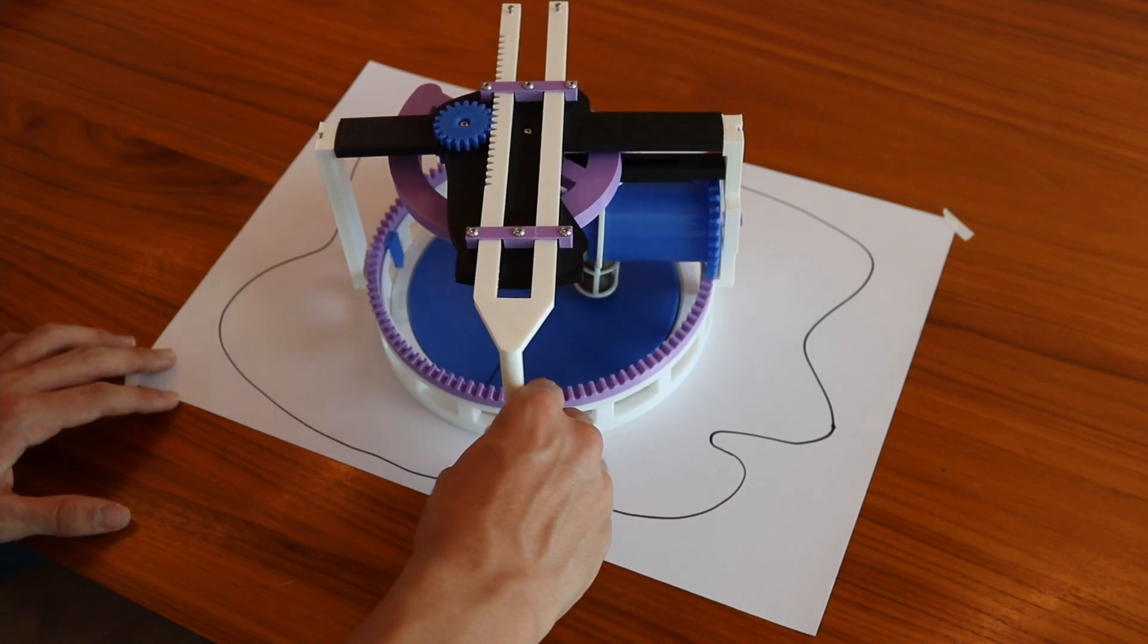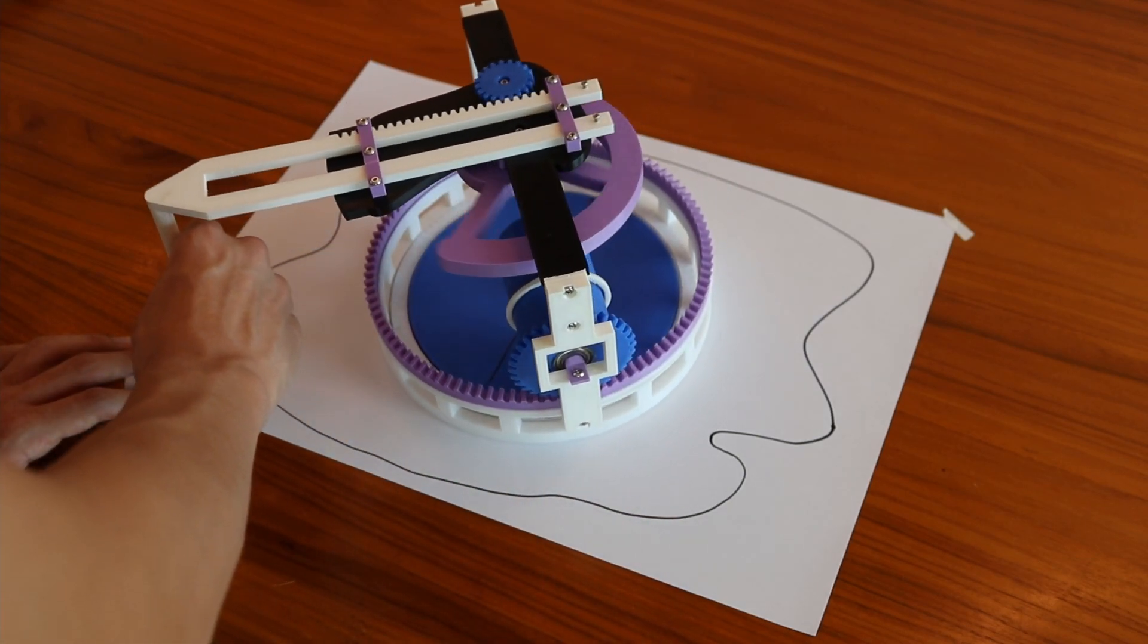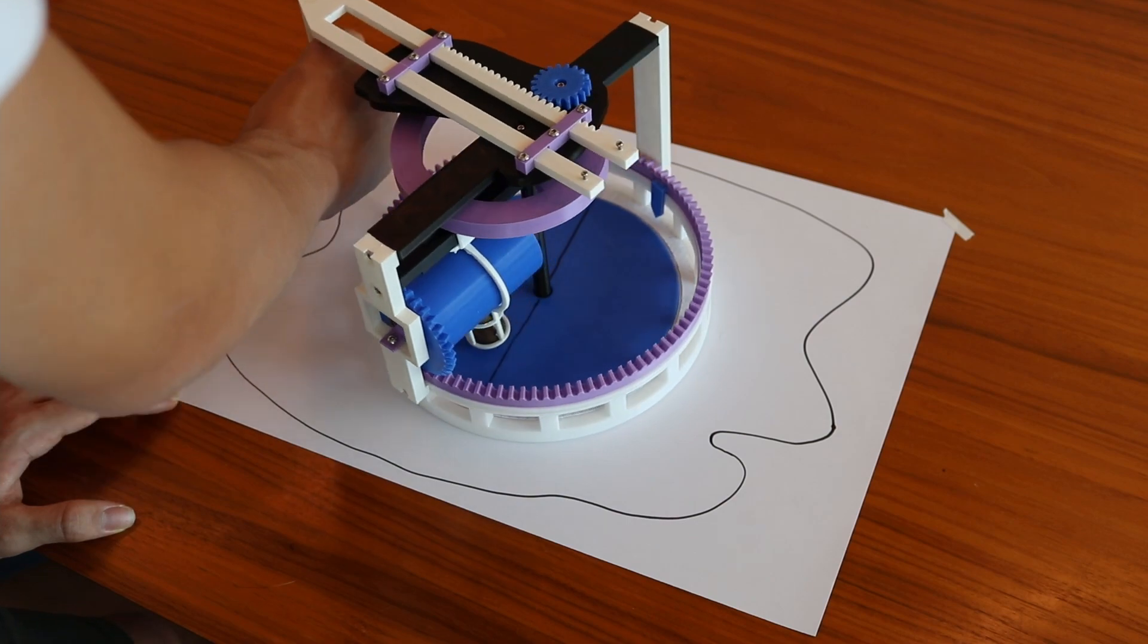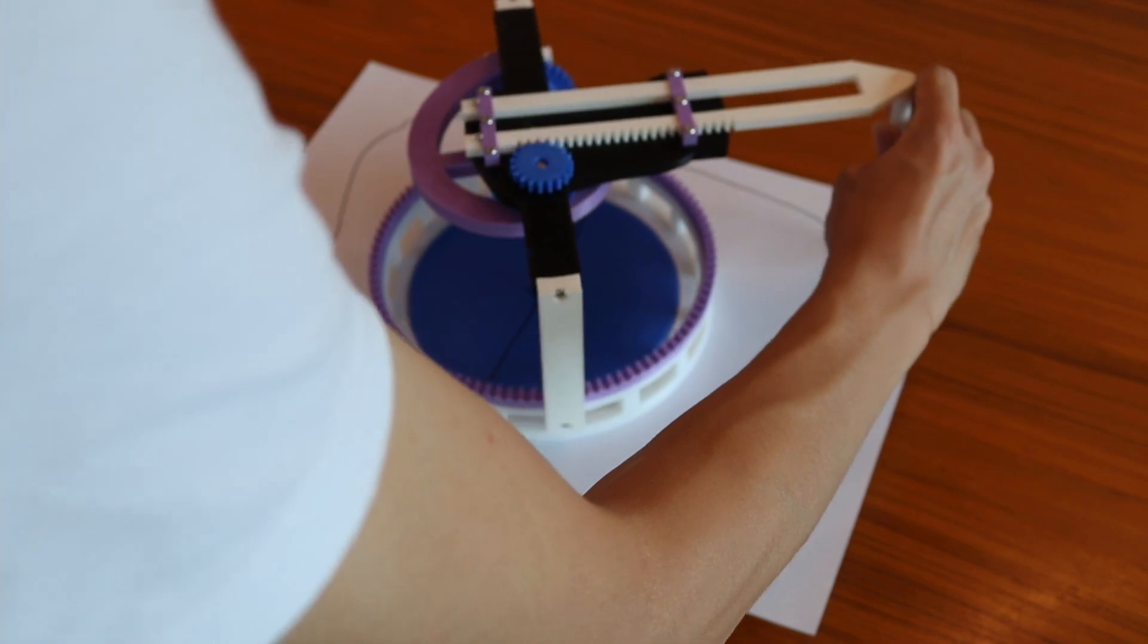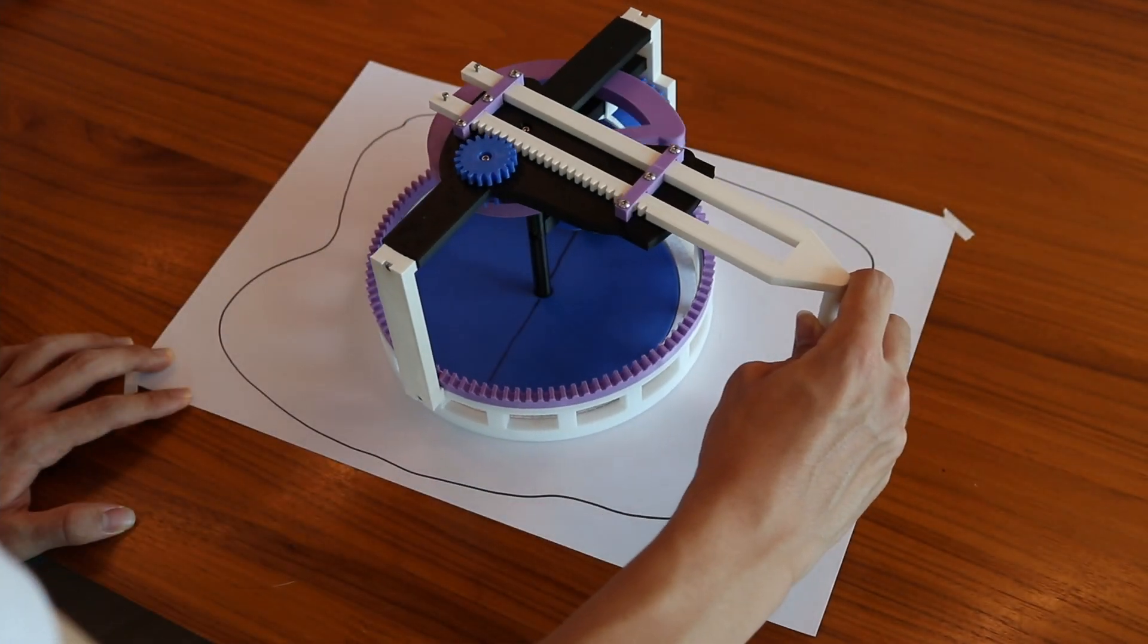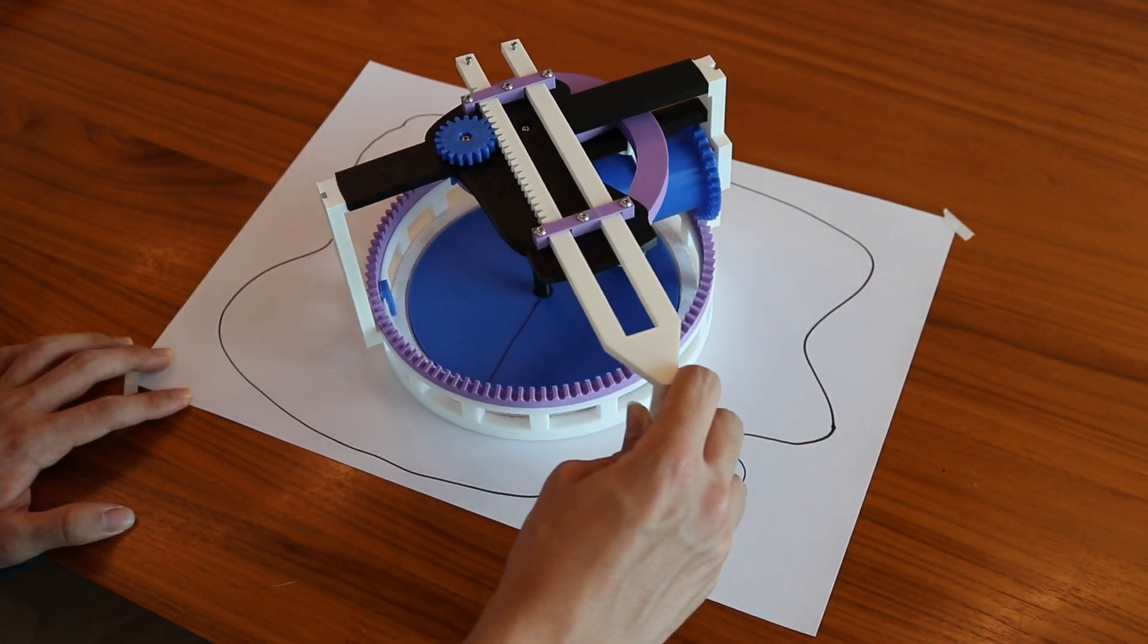The way it works is, by tracing the perimeter of the shape you want to find the area of, it will move all of these mechanisms inside the device, and at the end, a dial on the device will tell you the area of the shape that you just traced.